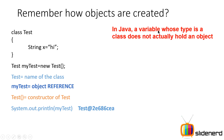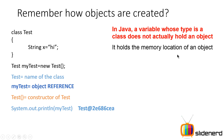So what is this about? In Java, a variable of a class type does not actually hold an object. In other words, the myTest variable does not contain the object — it is not the object. It contains a reference to the object, which is actually stored somewhere else. It holds the memory location of the object. When you print myTest, it prints the address of where the actual object is stored in memory.